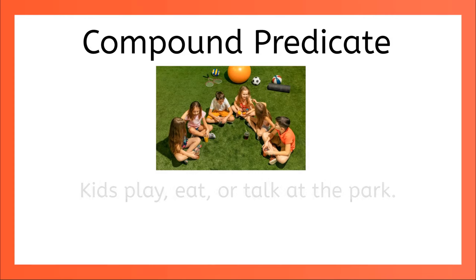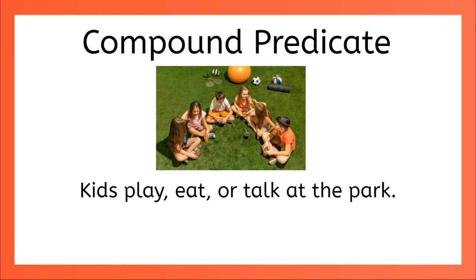One more. Let's look at this sentence: Kids play, eat, or talk at the park. Remember, a compound predicate contains two or more verbs or verb phrases. The subject here is kids. And what do the kids do? Kids play, kids eat, or kids talk at the park. Notice that the word OR is the coordinating conjunction joining these three predicates to their one subject. Also notice that when we have more than two verbs, we use commas to keep them separate.